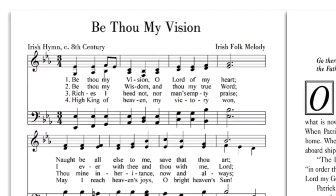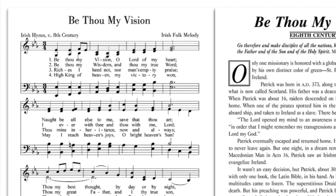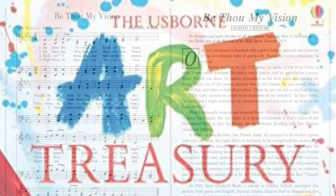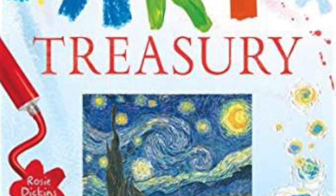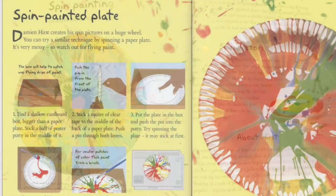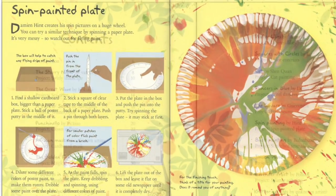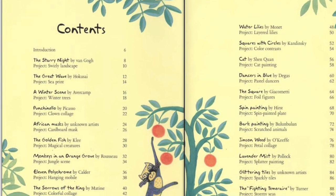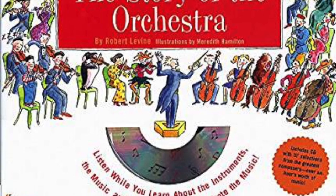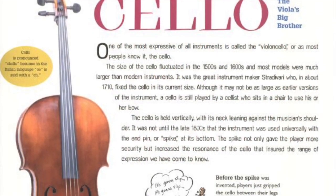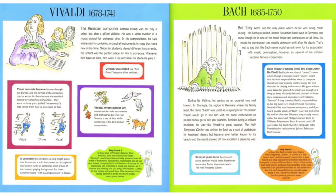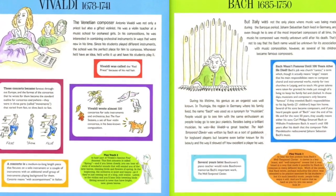For hymn study, we use Then Sings My Soul, which includes a hymn score, along with a background story and related scripture. The Usborne Art Treasury provides information about an artist and their work, along with detailed illustrations on how to replicate the artist's technique. In Mission World Wonders, we specifically correlate the art projects to a missionary we're studying. To gain an appreciation for classical music, students will learn about the instruments of the orchestra, along with composers Vivaldi, Bach, Haydn, Mozart, and Beethoven.